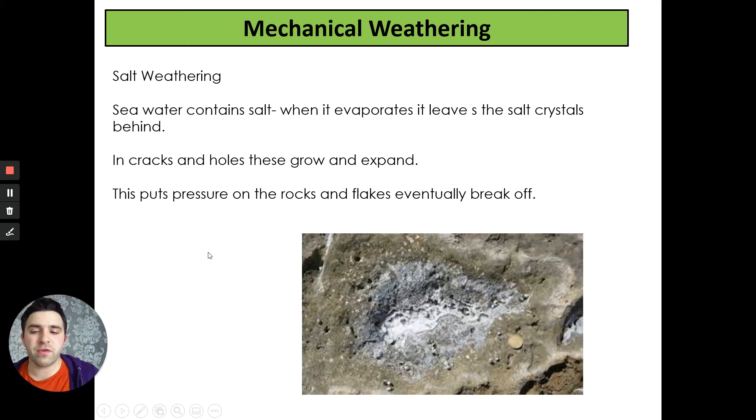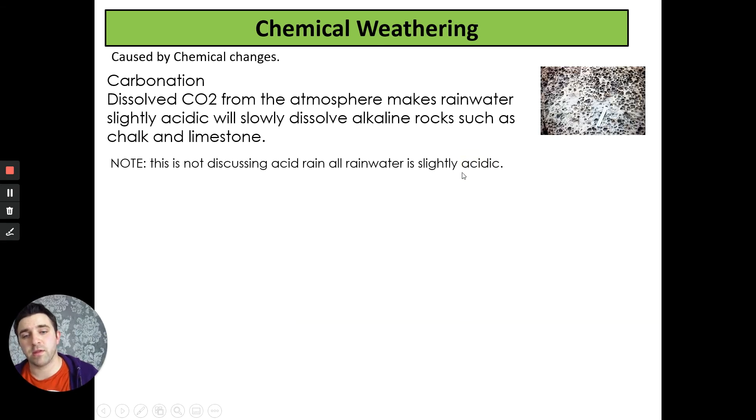We can also have salt weathering as a type of mechanical weathering. This is where seawater containing salt evaporates and leaves the salt crystals behind. These crystals grow in the cracks and holes in the rock and they expand and put pressure on the rock, causing bits to flake and break off. Hopefully this is making sense. If it isn't, wind yourself back, have another look. And please try and complete the task sheet giving a definition.